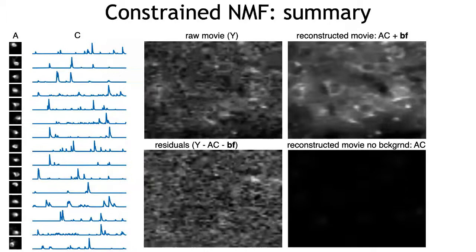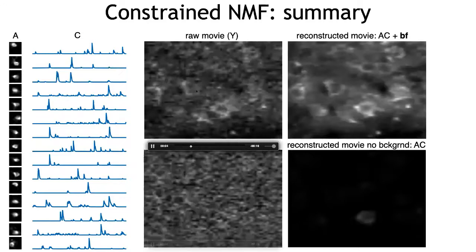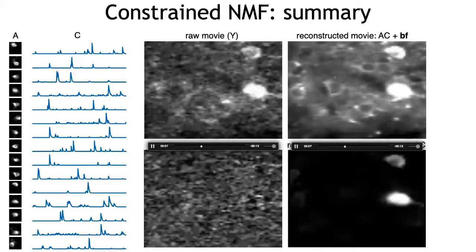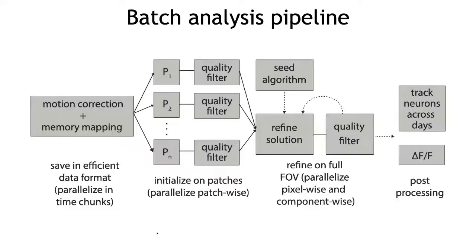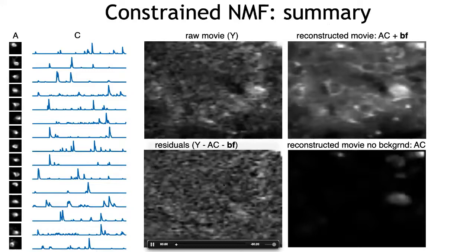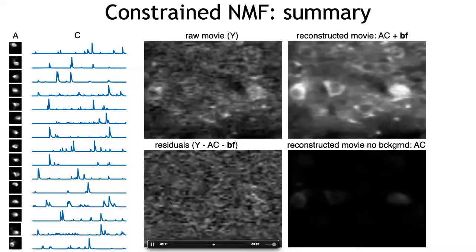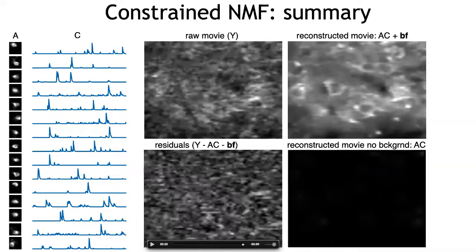You can reconstruct the movie with all the components — AC, B, and F — or you can reconstruct it using only the neurons, taking out the background. You can see very clearly what happens with these neurons when you remove the background. The residual — removing the reconstructed movie from the original — should mostly look like white noise if you did well. You can see small things here and there, so it's not perfect, because it's a model and some assumptions are violated, but in broad approximation it's doing a reasonable job.